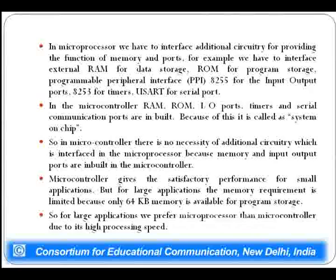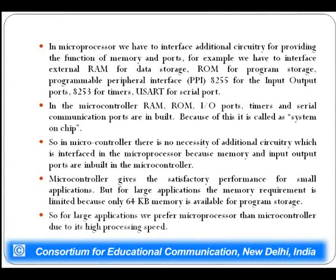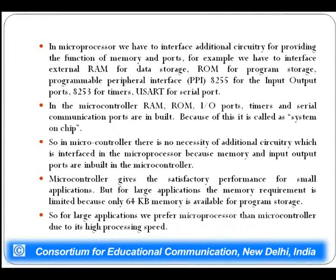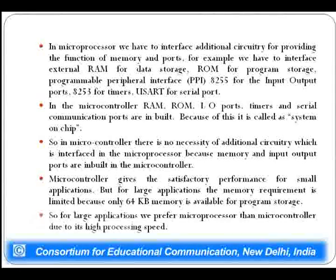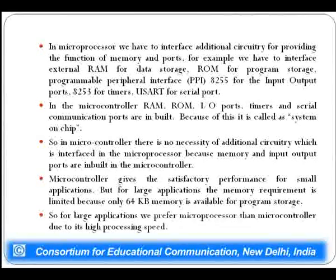Summarizing the differences: in a microprocessor, additional circuitry must be interfaced externally to provide functions of memory and ports — for example, external RAM for data storage, ROM for program storage, PPI chip 8255 for I/O ports, 8253 for timers, and USART for serial port communication. In a microcontroller, the RAM, ROM, I/O ports, timer, and serial communication ports are all inbuilt. Because of this it is also called a System on Chip, or SOC — the entire system fabricated on one single chip.